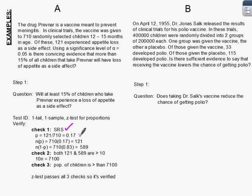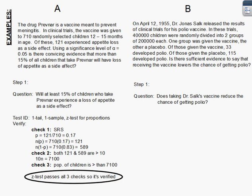We're seeing if that is significantly different than 15%. We do our n times p and n times 1 minus p check — they are both greater than 10, so that checks out. And then finally, is the population 10 times bigger than the sample? It seems like the population of children should probably be bigger than 7,100. So we have it all checked out, and that's Step 1 for Example A.